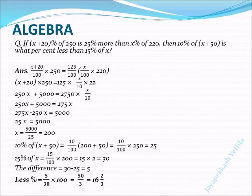Keep like terms together: 275x - 250x = 5000, so 25x = 5000. Therefore x = 5000/25 = 200.